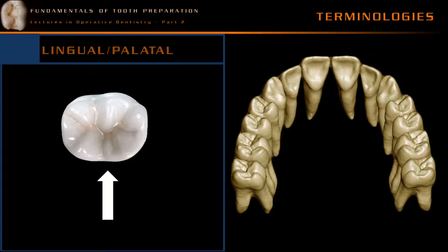The lingual surface is the surface of the teeth that faces the tongue. In the case of the maxilla, it is denoted as the palatal surface. In operative dentistry, the terms lingual surface and palatal surface are used to represent the internal surface of both maxillary and mandibular teeth.